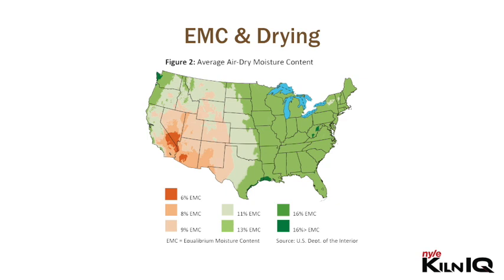Shown is a map of the USA. If we want to leave a piece of wood outside exposed to natural airflow but not to direct sunlight or precipitation, the wood will eventually equalize to that area's EMC. In New York State this will be about 13% and in the Nevada desert about 6%. The final use of timber determines to what moisture content it should be dried to.